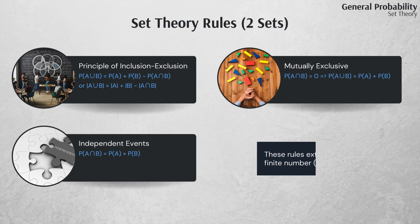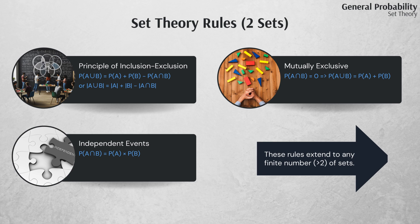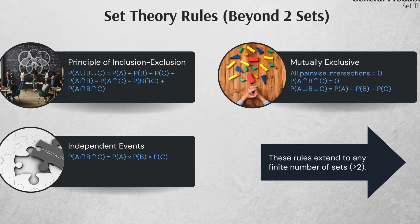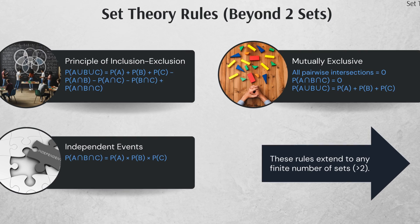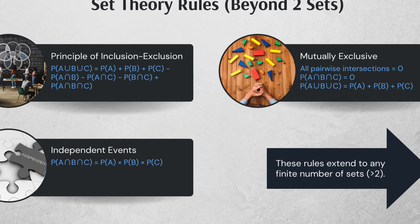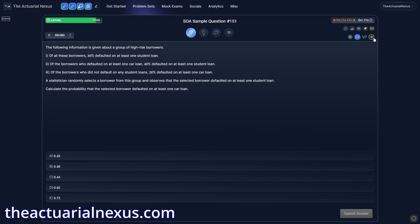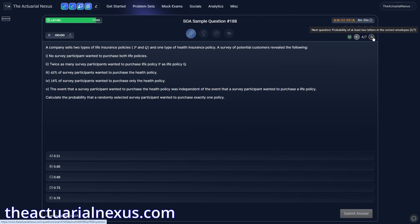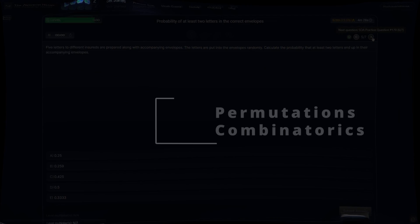To quickly recap, we looked at the principle of inclusion-exclusion, mutual exclusivity, and independent events for two events. These rules also extend to any finite number of sets greater than two. So with three events, you can see that the formulas work in a very similar way to the formulas with two events. Because this video is meant to be introductory, we're not going to go through any examples with three events. There are plenty of questions on the Actuarial Nexus with three events. So that wraps it up for set theory.